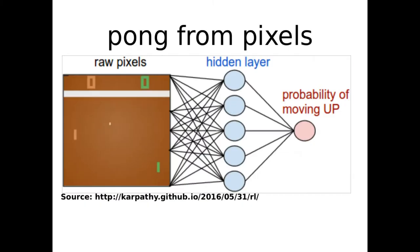This is called a sparse reward setting, which we will cover later. In this simple example we can see a CNN fed with frames from a computer game which outputs the binary class as action.